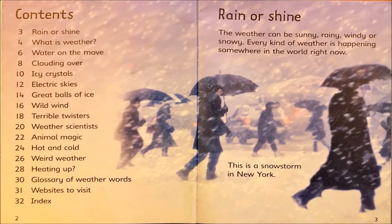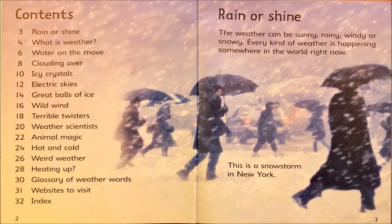Before we start reading, let's take a look at the table of contents. The table of contents gives us a clue about all the different types of weather we are going to be reading about today. Based on these titles, I can see we are going to be reading about rain, snow, ice, wind, and twisters, just to name a few. Each section of our text is going to be about a specific weather topic. I also notice that some of the sections are written as questions — authors sometimes use this writing technique to clue us, the readers, into the main idea. Let's get started.